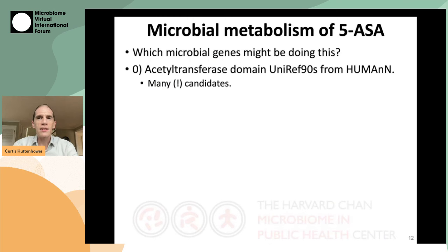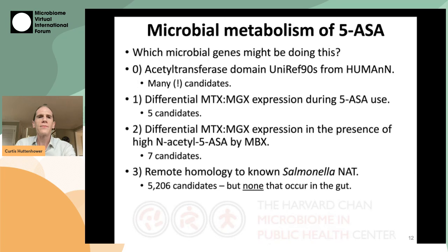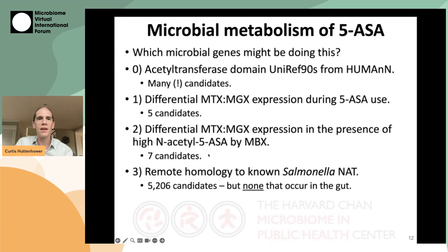Knowing this, Raj asked a few questions of the data in order to identify microbial genes that might be responsible. If you just look for acetyltransferases via homology, you get thousands and thousands of candidates — too broad a functional category to identify just the genes responsible. However, Raj used two multi-omic criteria that worked really well: one looked at differential metatranscriptomic expression relative to a metagenomic baseline during 5-ASA use contrasting users to non-users, and then a similar test of differential metatranscriptomic expression specifically during the presence of high N-acetyl-5-ASA, the inactivated form — combining all three data types and looking for genes with transcripts that are turned on when there's a lot of inactivated product.